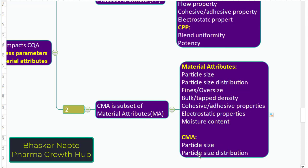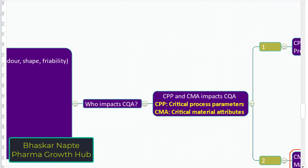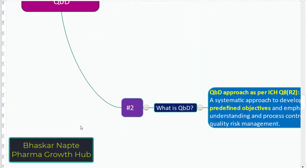To summarize: we talked about what QBD means and why it is required. We discussed what predefined objectives mean — that is our QTPP. We understand that we need to establish the relationship between QTPP and CQA to achieve the predefined objective. We also discussed what impacts the CQA — the critical process parameters and critical material attributes. I hope you now understand the important common terms associated with quality by design.